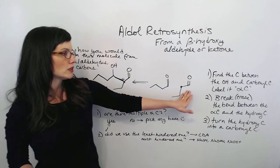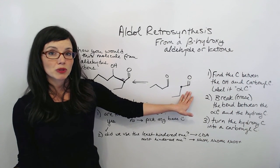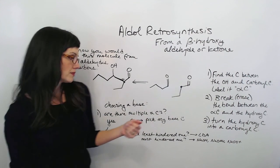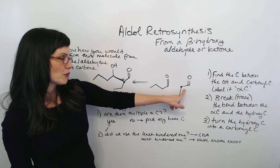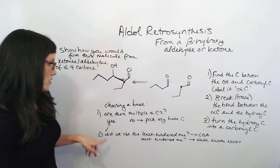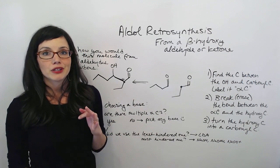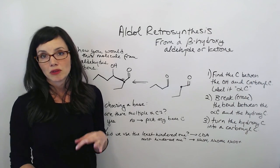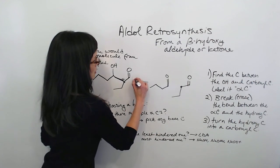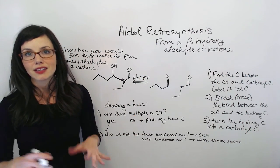We need to look on this molecule and ask: did that molecule have multiple alpha-carbons — could it have chosen from different ones? In this case, no, there was only one alpha-carbon, because there was a hydrogen on this side. So we can choose any base we want — LDA, sodium methoxide, sodium hydroxide, whatever. I'm just going to use sodium ethoxide. Perfect, I'm done.